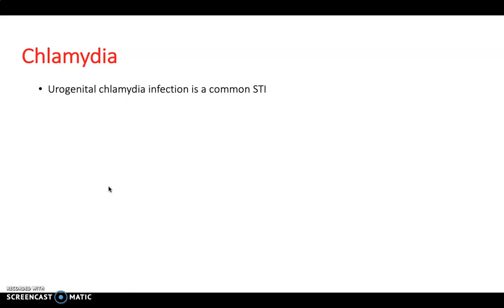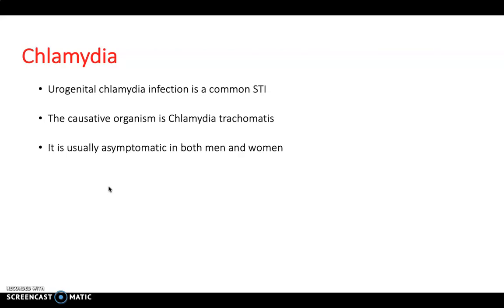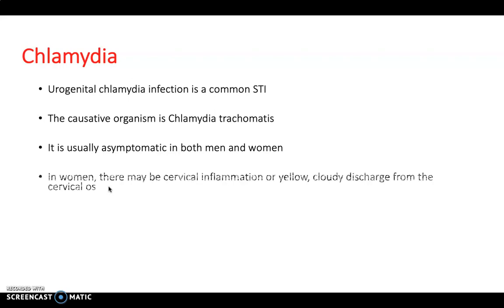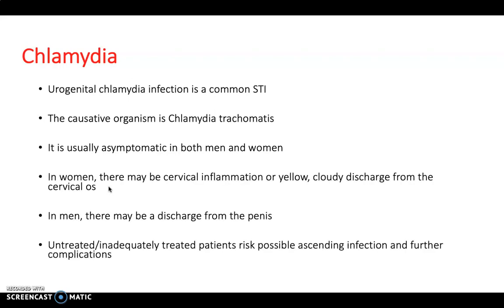For chlamydia, this is a urogenital infection and one of the commonest STIs. The causative organism is Chlamydia trachomatis, and it is usually asymptomatic in both men and women. Having said this, they may present with some symptoms — for example, in men there may be discharge from the penis, and in women there may be cervical inflammation or yellow discharge from a cervical os.